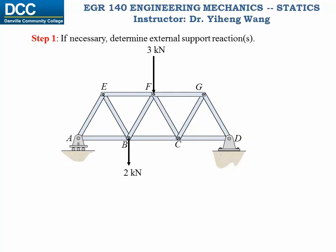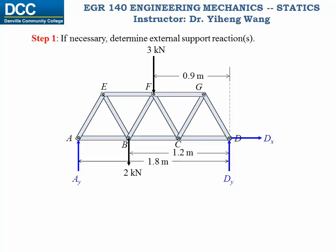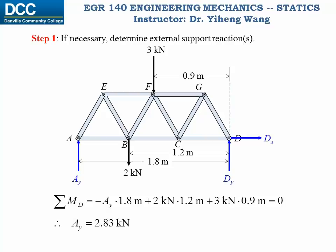The first step for this problem is to determine the support reaction at point A. To do so, we draw the free body diagram for the entire structure and sum the resultant moment about point D. From this single equation, we are able to solve for the force Ay. Keep in mind that for some problems it might not be necessary to determine the support reaction, so you should use your own judgment.